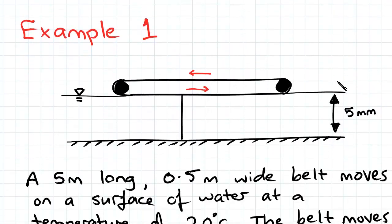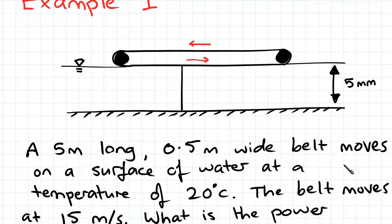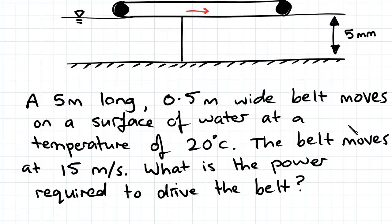So in this example we have a 5 meter long, 0.5 meter wide belt which moves on a surface of water at a temperature of 20 degrees Celsius. The belt moves at 15 meters per second and we're asked to find the power required to drive the belt.